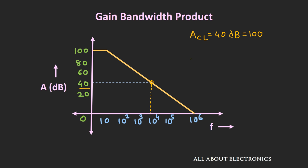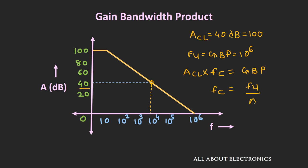For this particular response, we know that the unity gain frequency or gain bandwidth product of the op-amp is 10 to the power 6 Hz. The product of the closed-loop gain and the cut-off frequency will be constant and equal to the gain bandwidth product of the op-amp. From this, we can find the cut-off frequency, which equals the unity gain frequency divided by the closed-loop gain of the op-amp. In this particular case it comes out as 10 kHz. So whenever we are using the op-amp in a closed-loop configuration, for the given gain we can find the cut-off frequency — up to that frequency the gain will remain constant.